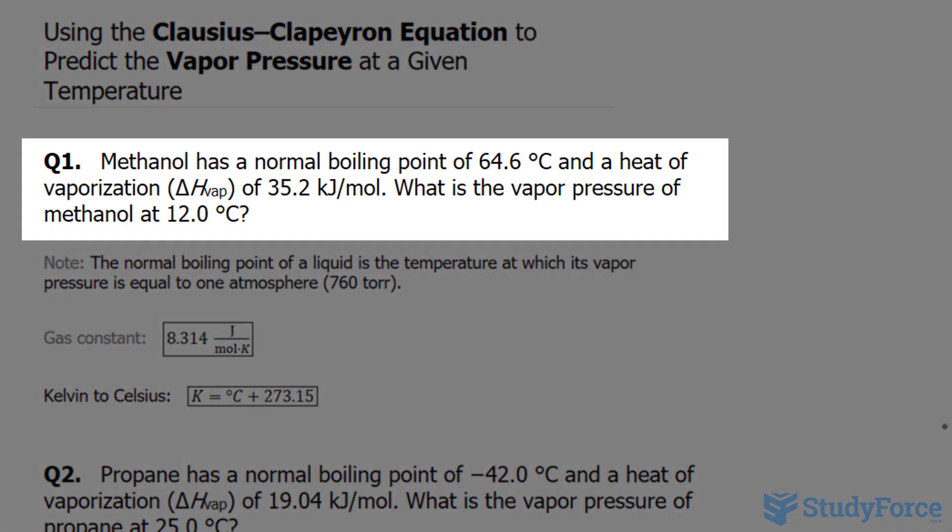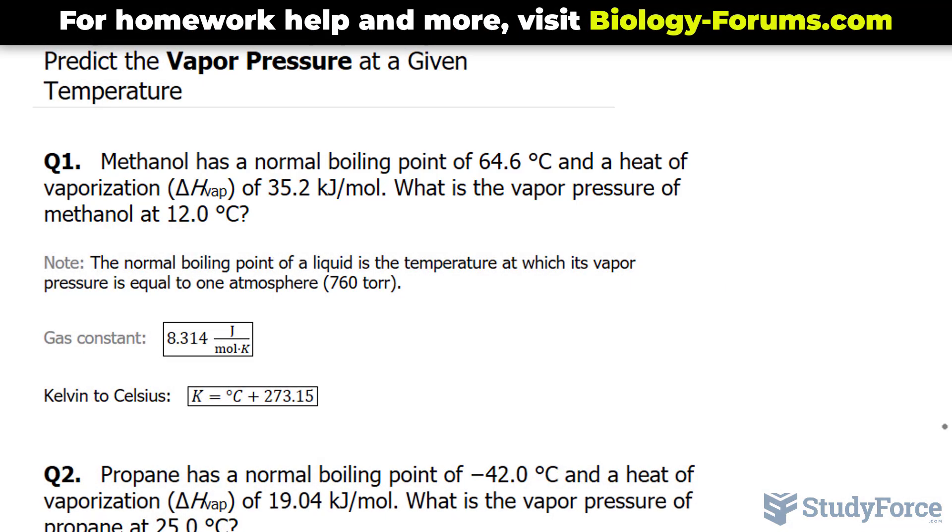The first question reads: Methanol has a normal boiling point at 64.6 degrees Celsius and a heat of vaporization of 35.2 kilojoules per mole. What is the vapor pressure of methanol at 12 degrees Celsius?